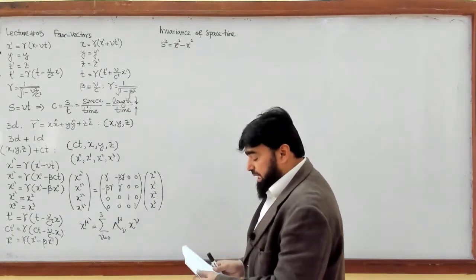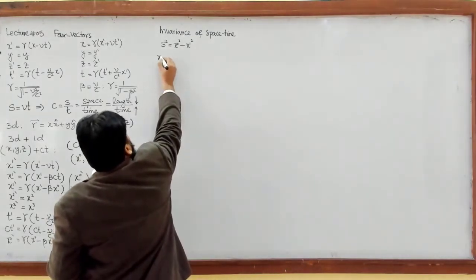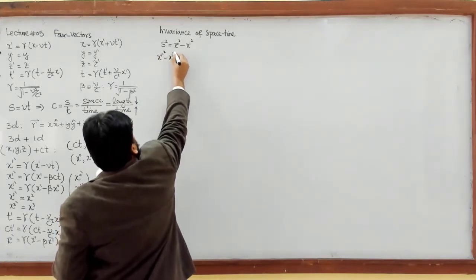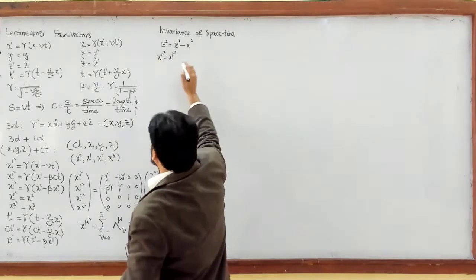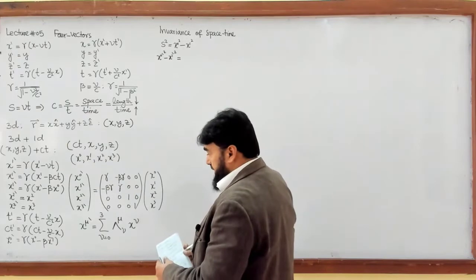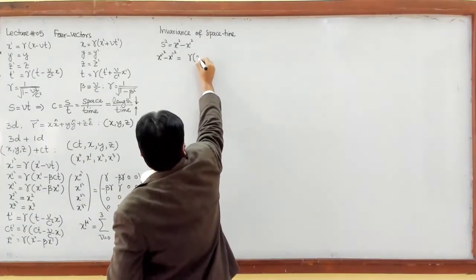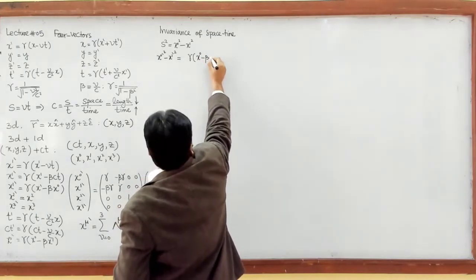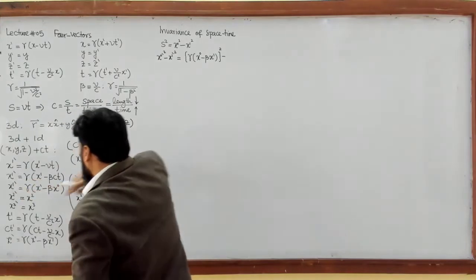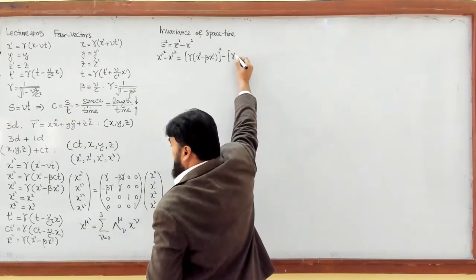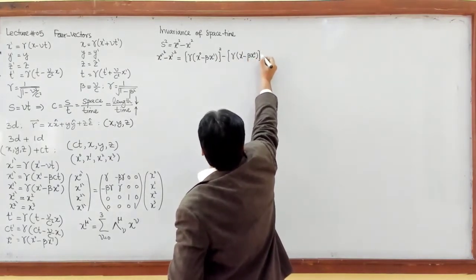We now apply the same thing between moving frames. What will happen to this? In the moving frame, this becomes x₀-prime squared minus x₁-prime squared. Now I substitute the Lorentz transformation values: x₀-prime equals gamma times (x₀ minus beta times x₁), whole squared, minus x₁-prime which equals gamma times (x₁ minus beta times x₀), whole squared.